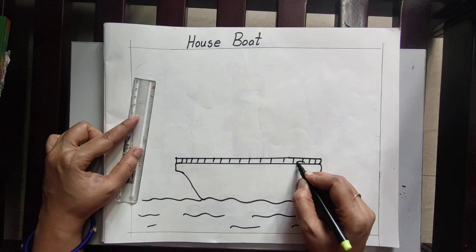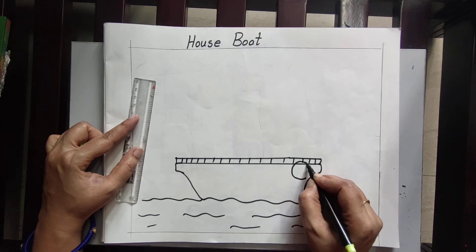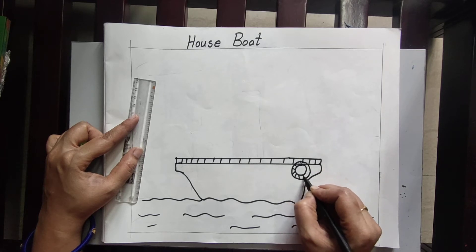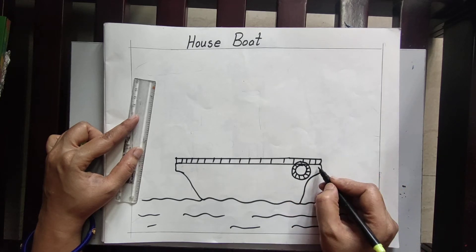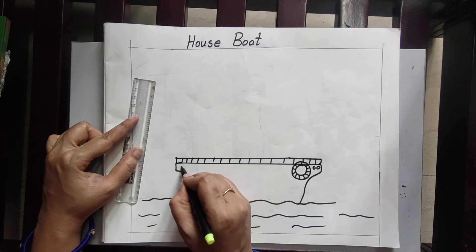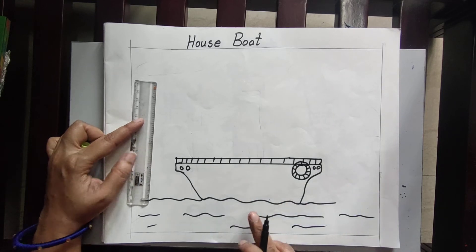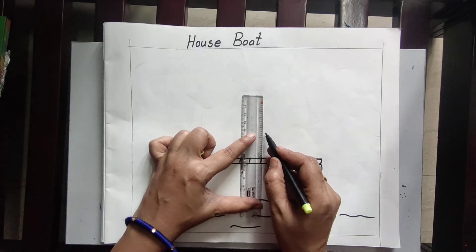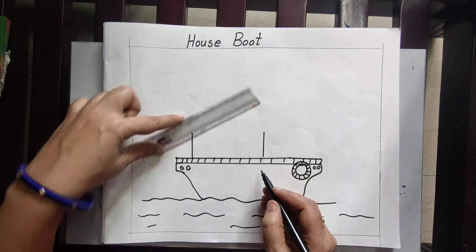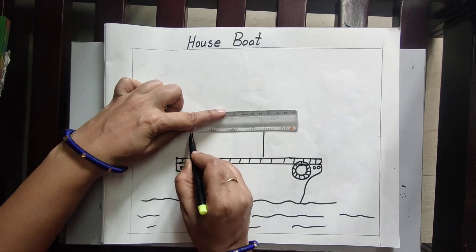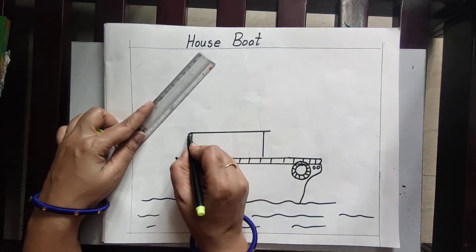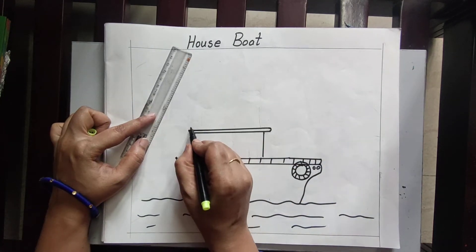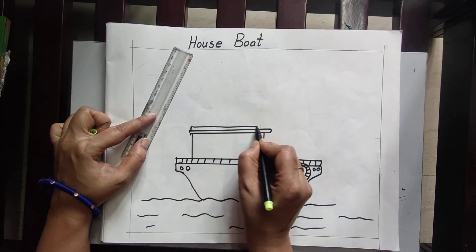Afterwards here I am drawing a tube. You know why you are using a tube for swimming. Afterwards I am going to draw the house picture. Yeah, very easy. Afterwards draw one more line.